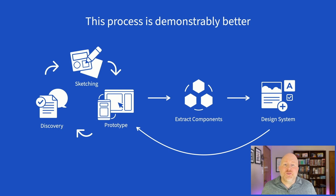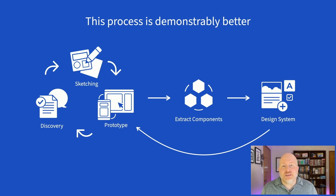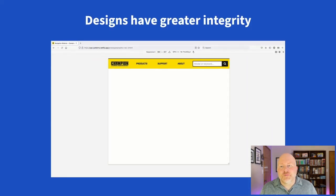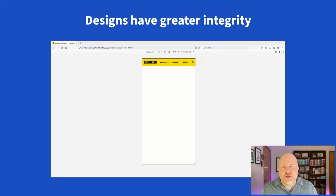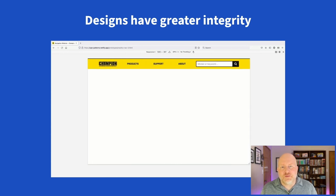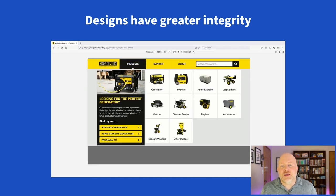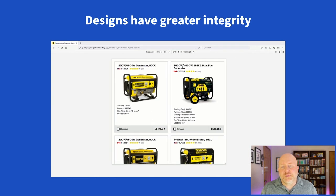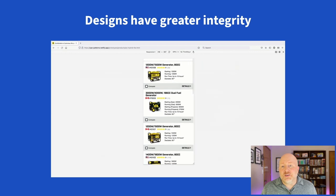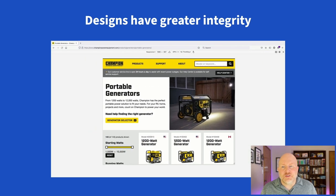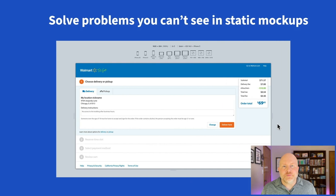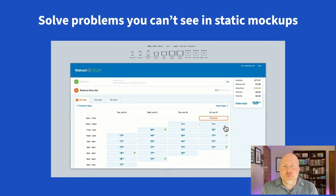I'm not saying we found the one true way to design responsive designs and build design systems—every organization is different. But I can say confidently that this process is demonstrably better than the traditional web design process because we've used both. When we design this way, the designs have greater integrity because each small component has been thoughtfully designed and fully responsive. Because the smaller pieces are fully responsive, when you get to building full pages, the pages don't break down. The foundation is solid, so everything is responsive.